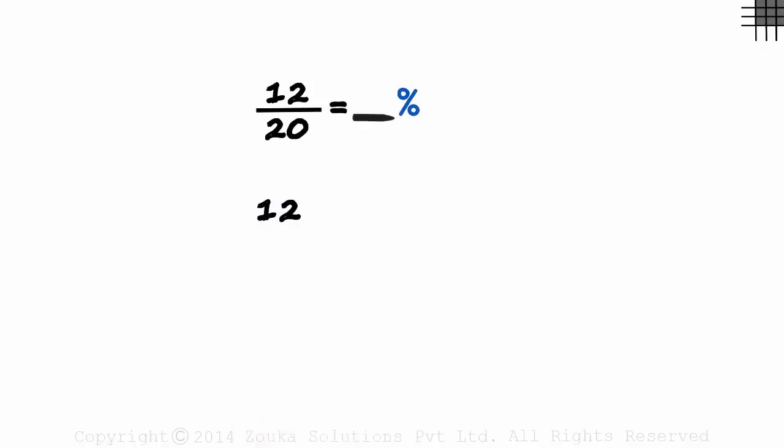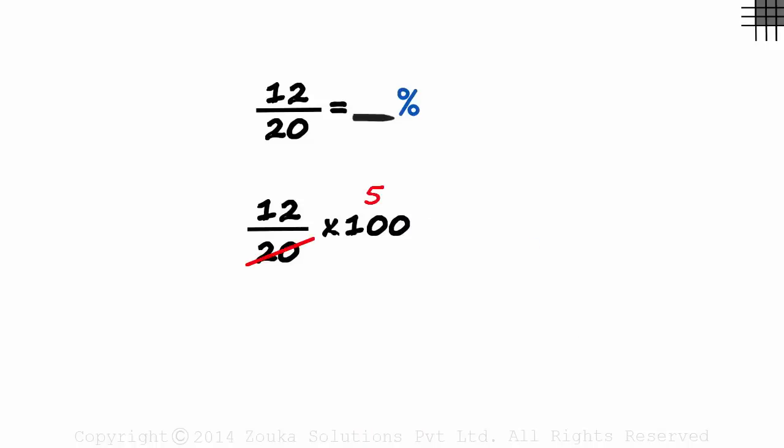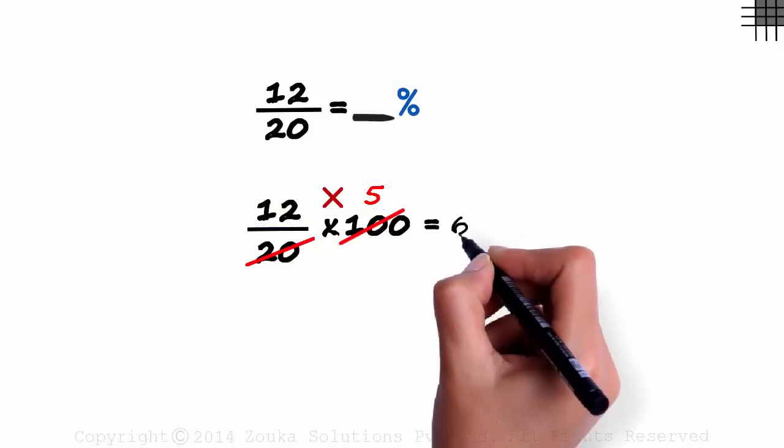So we have 12 over 20 multiplied by 100. 20 times 5 is 100, and 12 times 5 is 60. Yes, 60 percent.